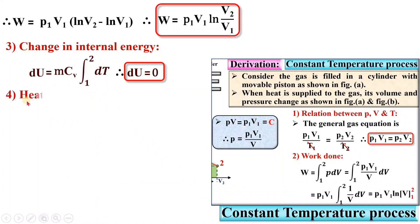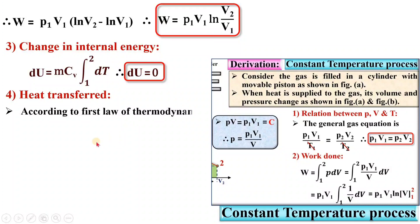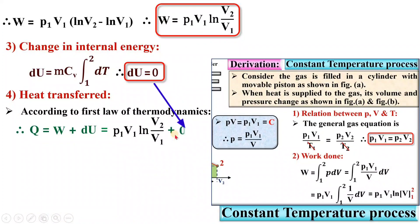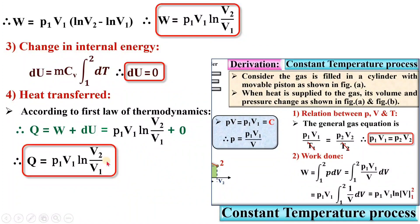The next term is heat transfer during the constant temperature process. According to the first law of thermodynamics: Q = W + dU. Since W = P1V1 ln(V2/V1) and dU = 0, we get Q = P1V1 ln(V2/V1). This is the heat transfer equation for the constant temperature process.